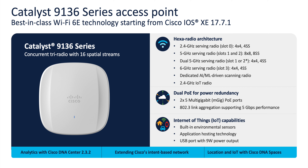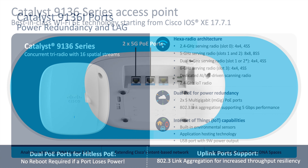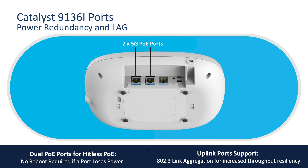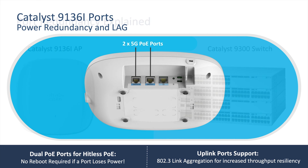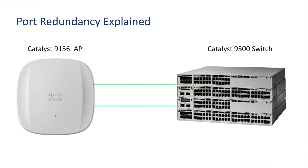This video will demo the port redundancy feature which provides high availability for the Catalyst 9136i. The AP has two 5GB ports, and port redundancy works when connecting both ports to PoE sources. One of these ports will be deemed primary, and another as secondary.